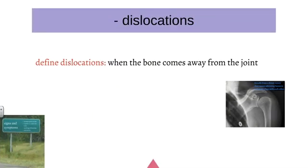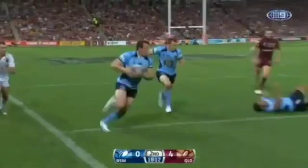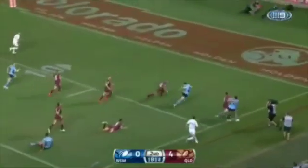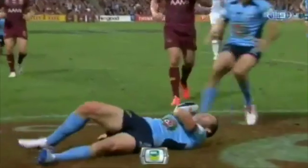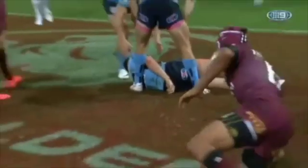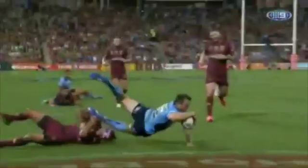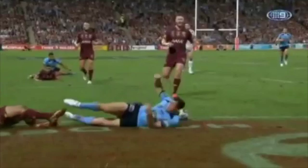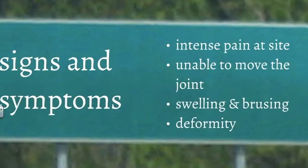The next dash point is dislocation. A dislocation is when the bone comes away from the joint, usually as a result of a direct injury that causes the adjoining bones to no longer align with each other. Signs and symptoms include intense pain at the site, inability to move the joint — for example, with a shoulder dislocation the athlete would find it very difficult to move the shoulder — as well as swelling, bruising, and deformity. These are quite similar to fracture symptoms.